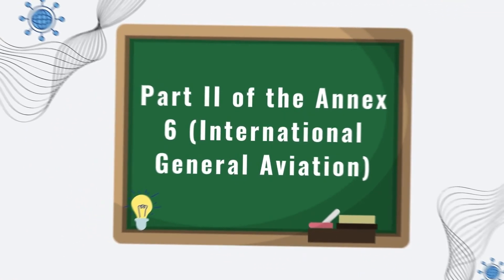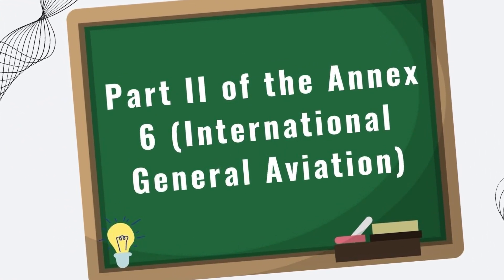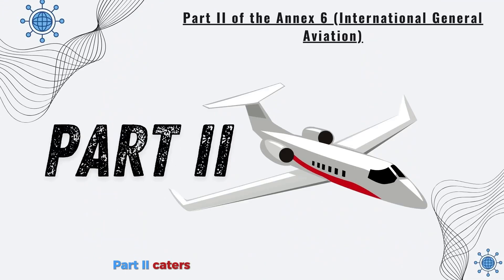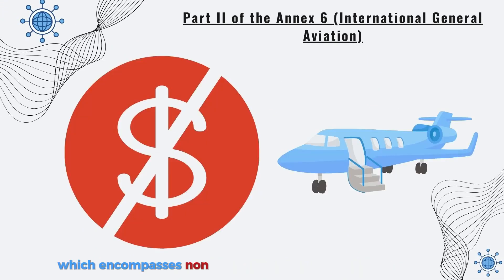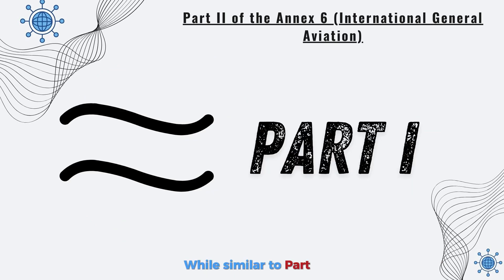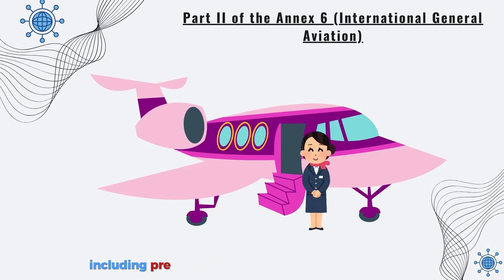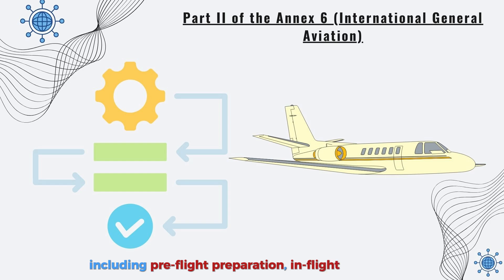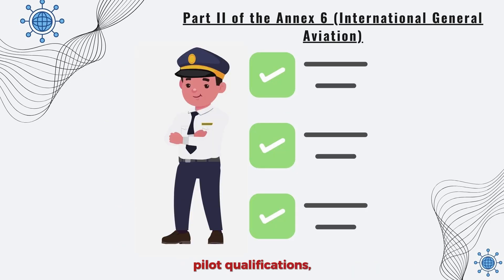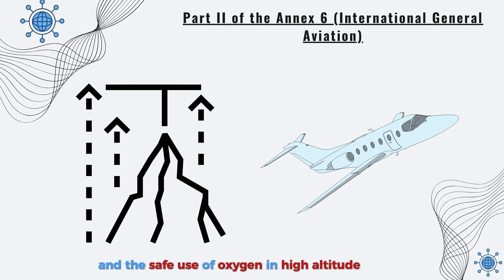Let's move on to Part 2 of Annex 6, International General Aviation. Part 2 caters to International General Aviation, which encompasses non-commercial flights like private planes. While similar to Part 1, it focuses on areas important for general aviation, including pre-flight preparation, in-flight procedures, pilot qualifications, and the safe use of oxygen in high-altitude flights.